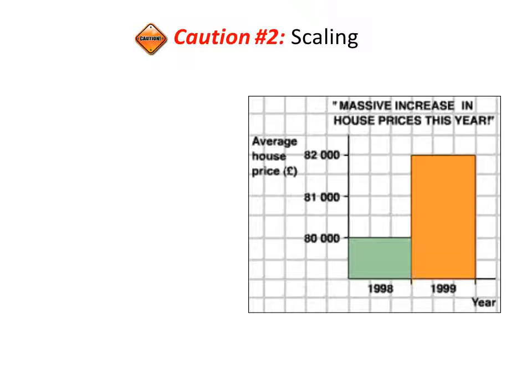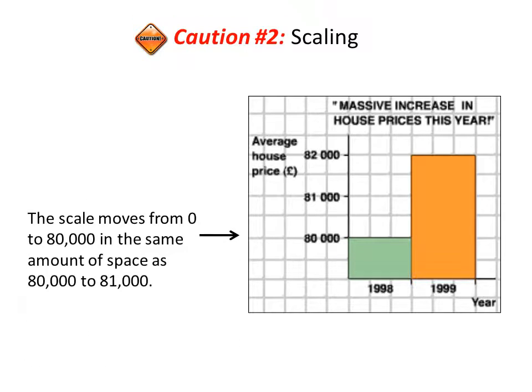Our next caution is about scaling. Same graph — 'massive increase in house prices this year.' The scale moves from zero to eighty thousand in the same amount of space as eighty thousand to eighty-one thousand.